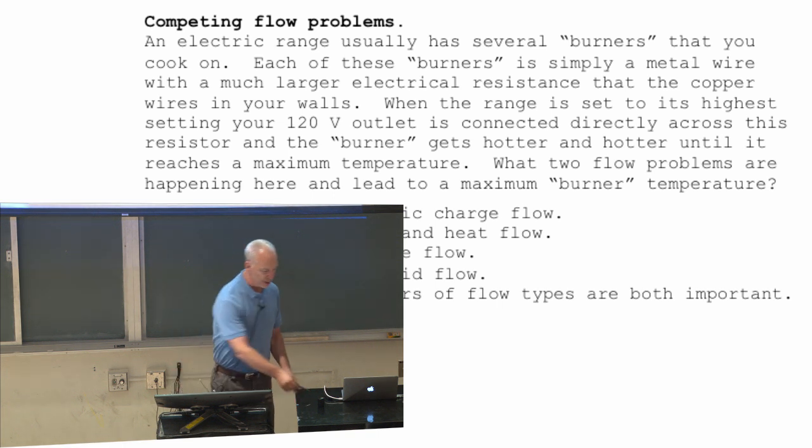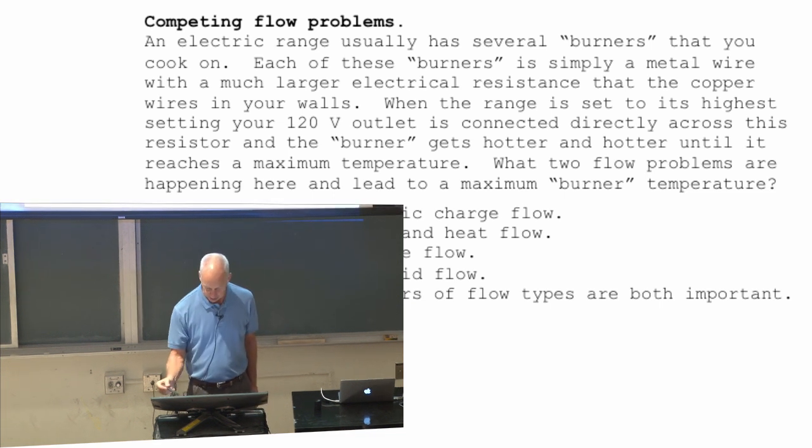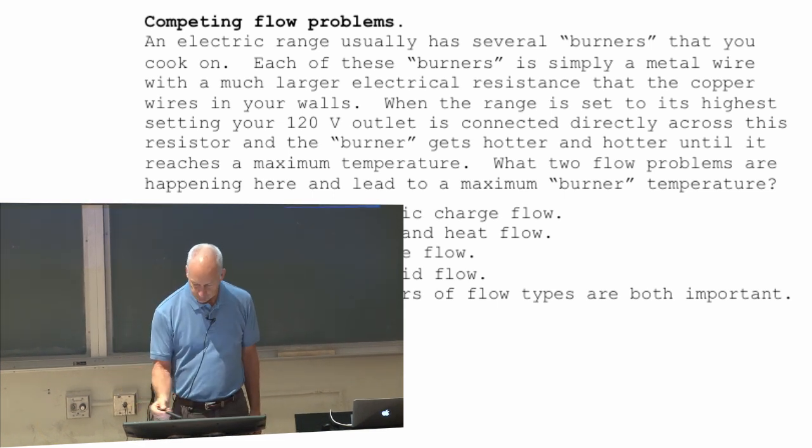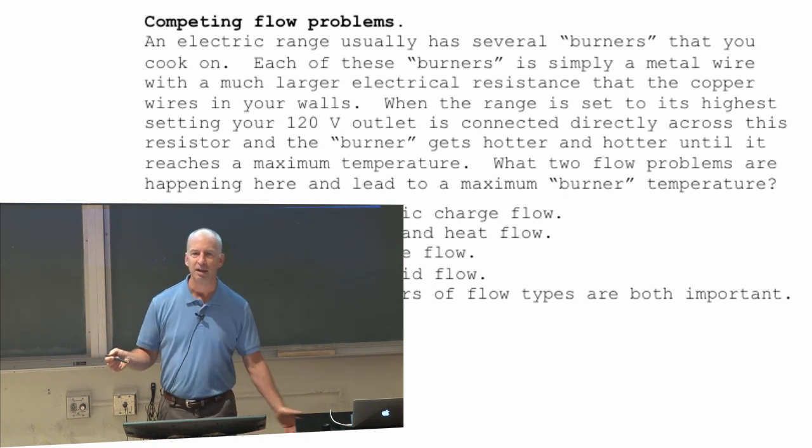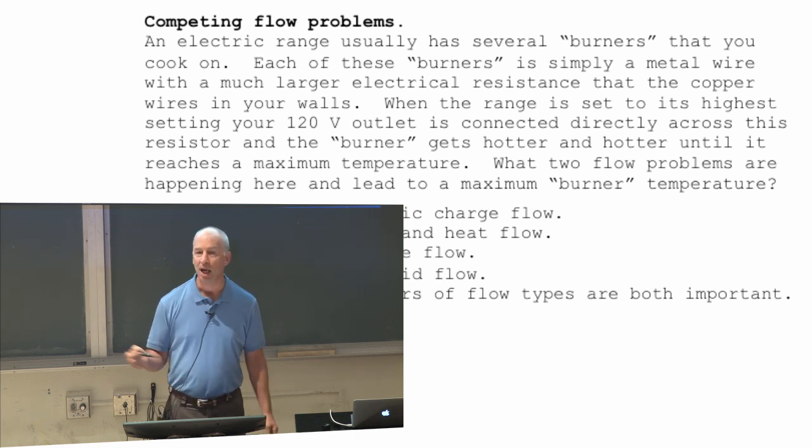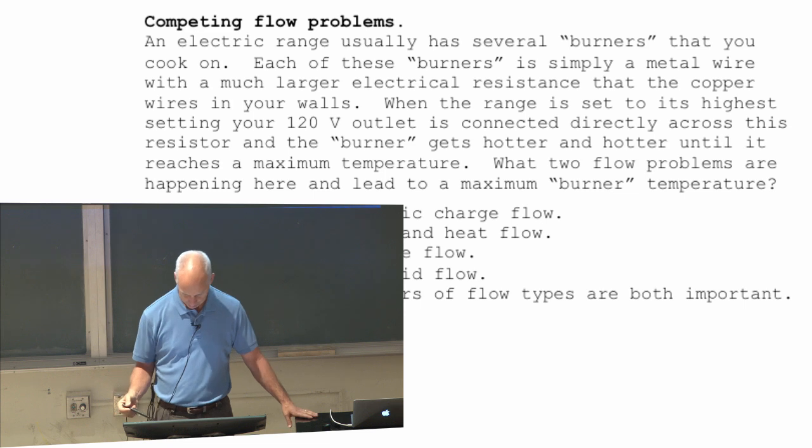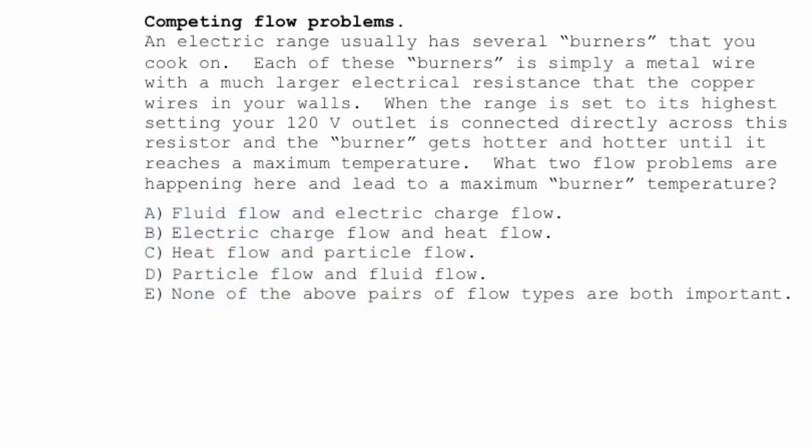An electric range usually has several burners. The burners are just a resistor that's wound around in a circle and you plug the resistor into the wall. So around 120 volt outlet connected across this resistor. What happens when you do that? Current flows, the resistor starts getting hot. It gets hotter and hotter and hotter, but it doesn't just melt down. It doesn't get hot enough to melt into slag on your range fortunately. It has a maximum temperature. Even if you plug it right into the wall and it's not trying to control the temperature at all, there will be a maximum temperature for that burner. It doesn't get hotter than red hot. What two flow problems are happening here? Think about the flow problems that are happening here and are leading to this maximum temperature. Talk about it.